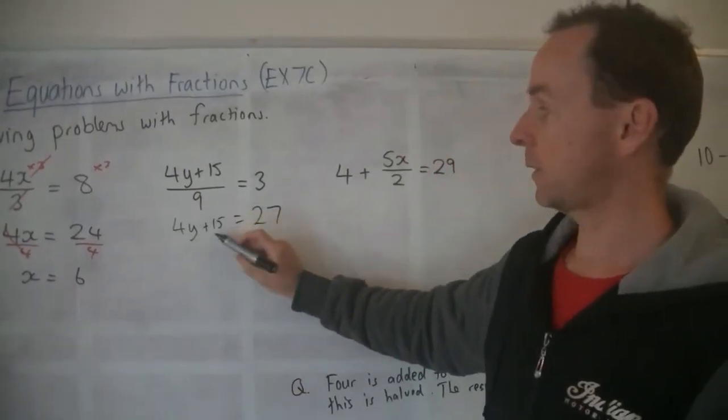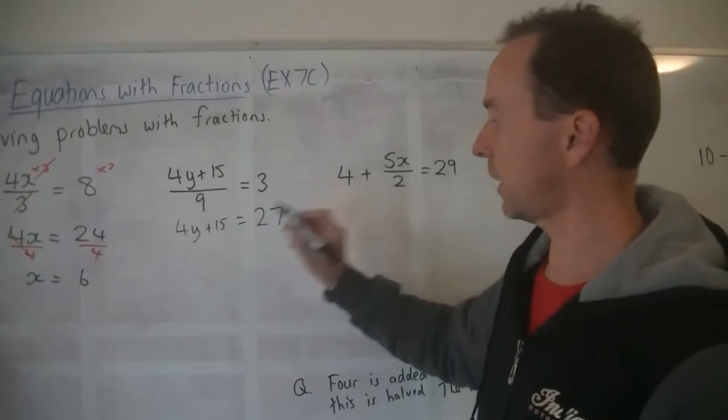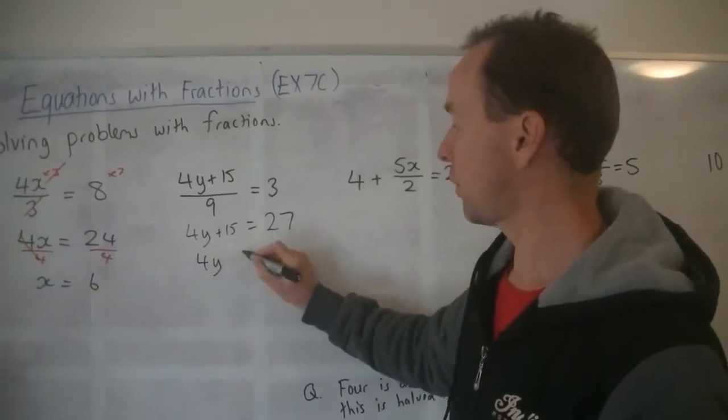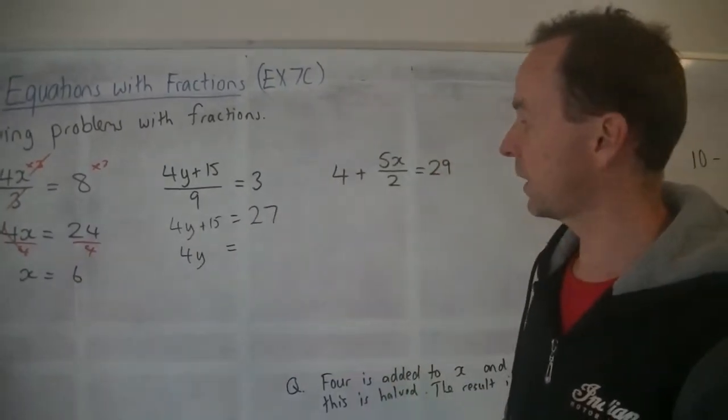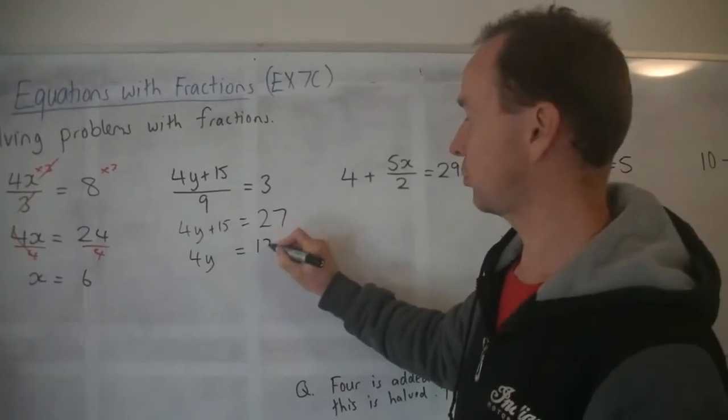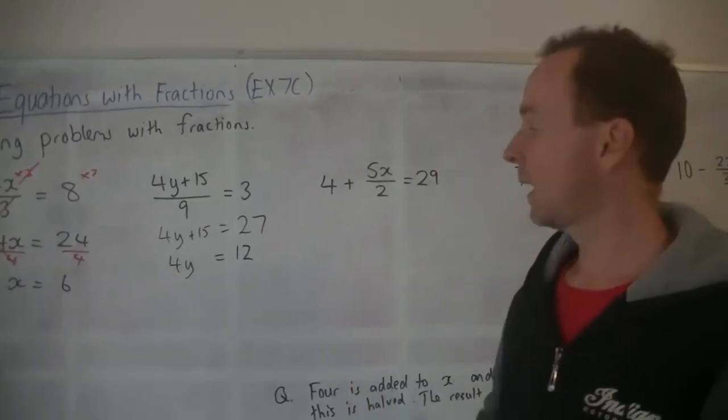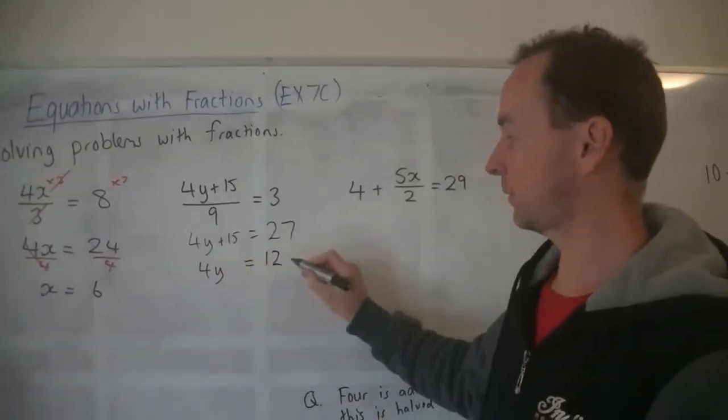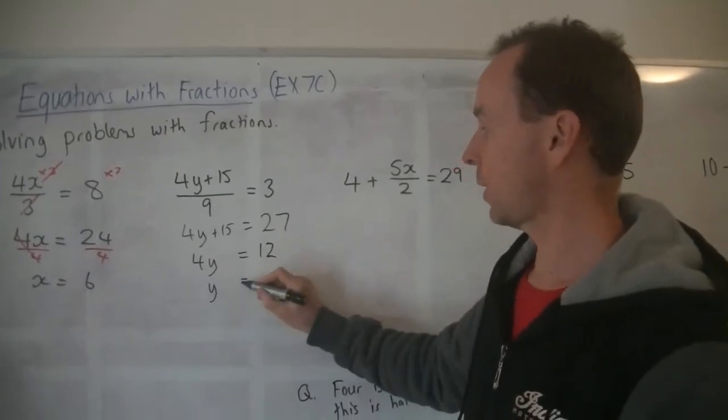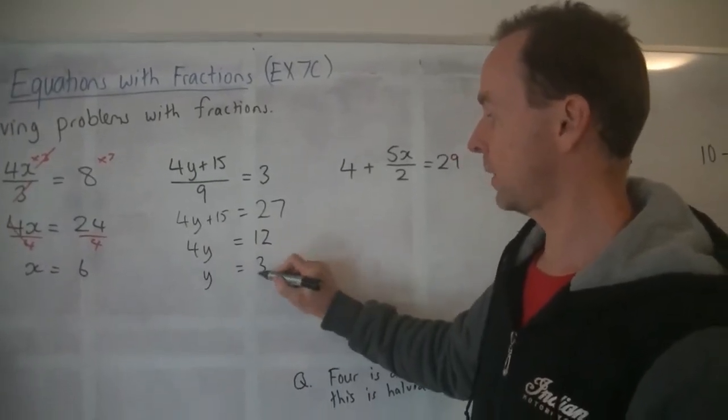Now next step, we need to get rid of this plus 15. So we minus 15, minus 15. So we've got 4y equals 27 minus 15 is 12. And last step, divided by 4, divided by 4.